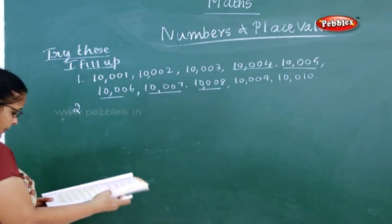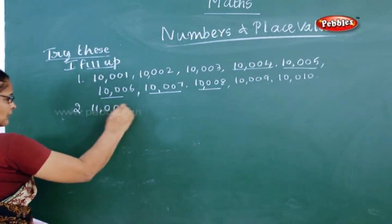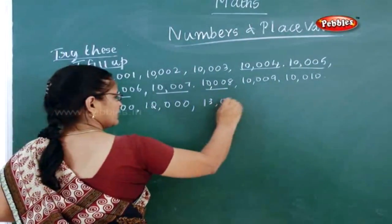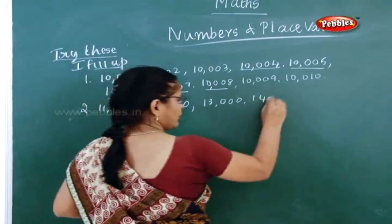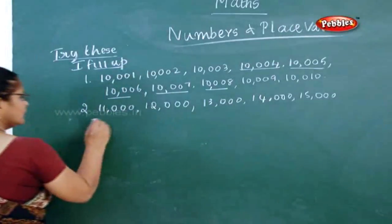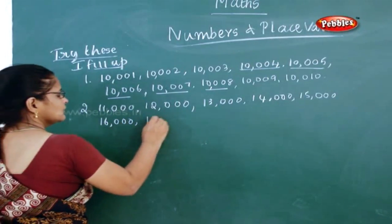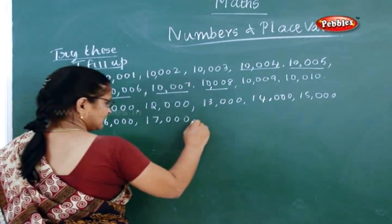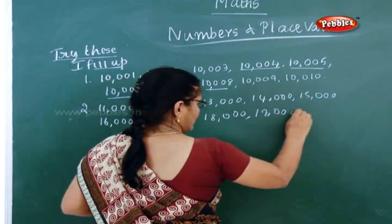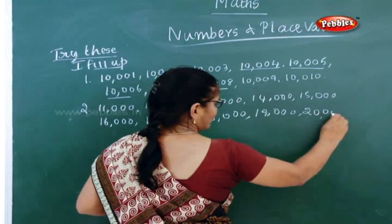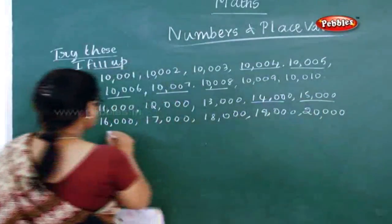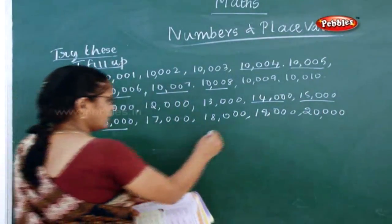Now next one, second one: eleven thousand, twelve thousand, thirteen thousand, fourteen thousand, fifteen thousand, sixteen thousand, seventeen thousand, eighteen thousand, nineteen thousand, twenty thousand. In this, what is the blank given? They started from fourteen, fifteen, sixteen, then eighteen, nineteen.